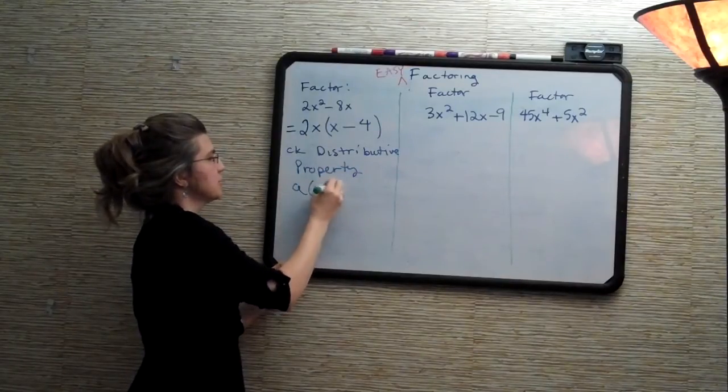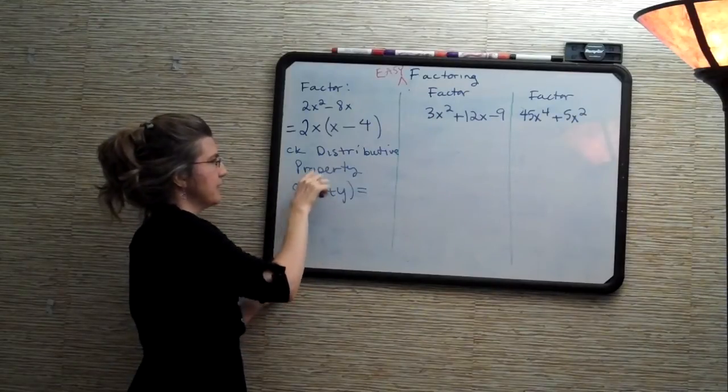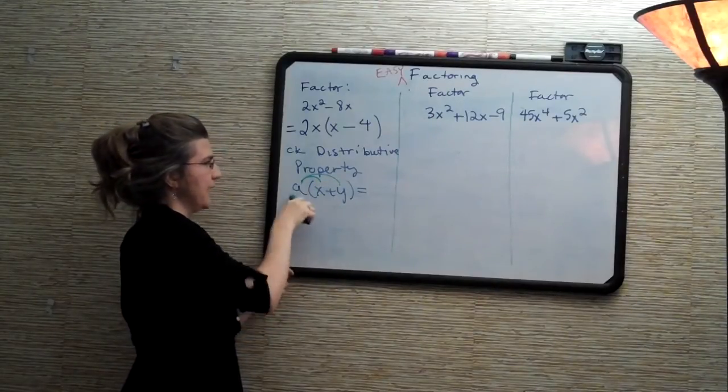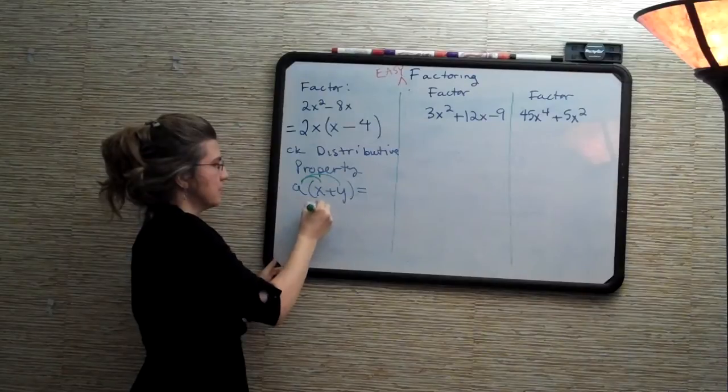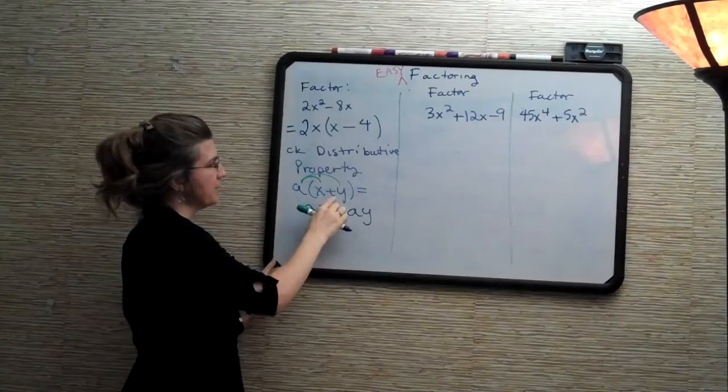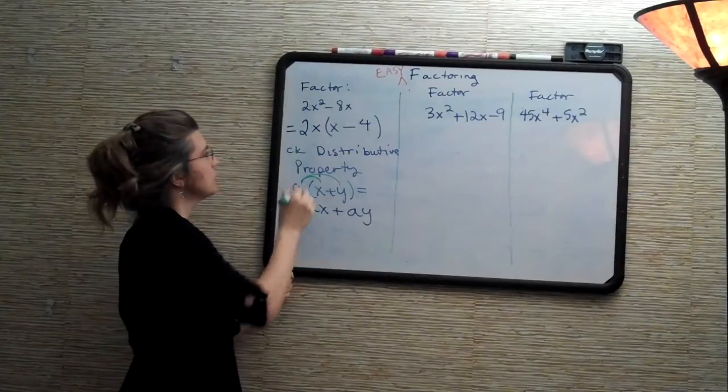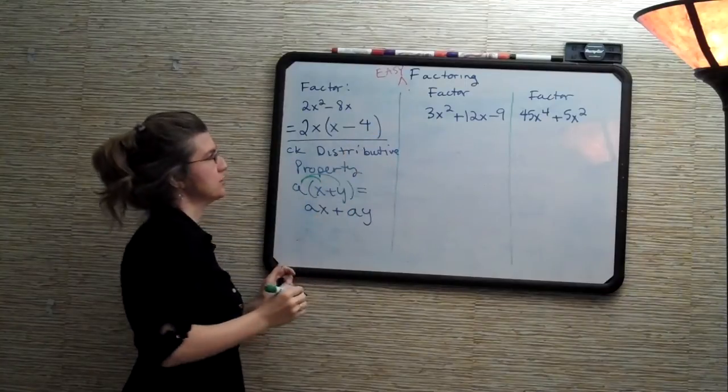The distributive property tells us that a times (x plus y) is equal to, and you may like to think about it this way, a times the x and then adding that to a times the y. And if there were a negative sign here, this would be ax minus ay. So the distributive property works whether you are adding or subtracting.